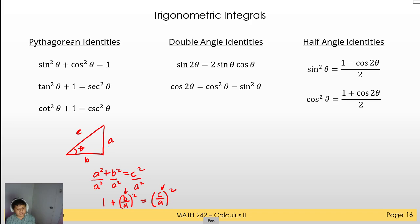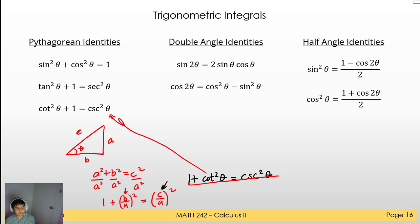Since b over a is the adjacent over the opposite — that is cotangent — we get 1 + cot²θ = csc²θ. You can derive all the Pythagorean identities by dividing the base Pythagorean theorem by a², b², or c².